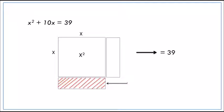Hence, we have x squared and then 5x and 5x with total of 39 for the area. We want to find a small square at the bottom right to complete the bigger square and the area is 25.